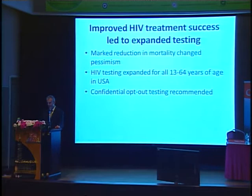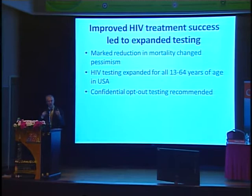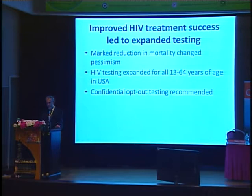So improved efficacy meant that the urgency of treatment was expanded markedly. Once that was discovered in the United States, we changed our recommendations so that everyone from 13 to 64 was supposed to have an HIV test. And throughout sub-Saharan Africa, there was a paradigm shift so that instead of occasionally offering testing, testing was actually the expectation — you had to opt out of HIV testing. So the transformation in efficacy of treatment then led to a transformation in the detection of infection at the population level.